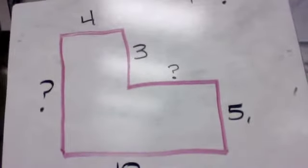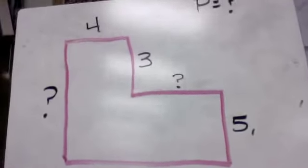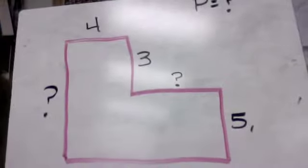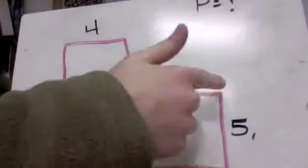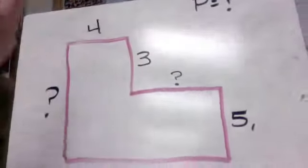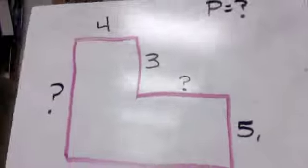Perimeter is really easy when you have all the sides to add up. All you have to do is go around the outside, add up all the numbers, and that's your perimeter.